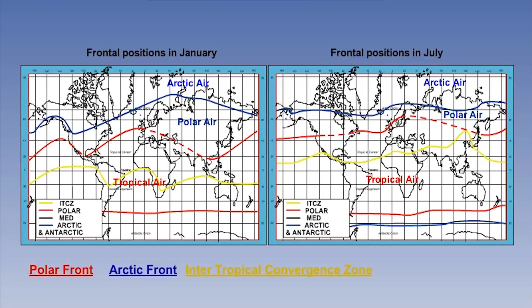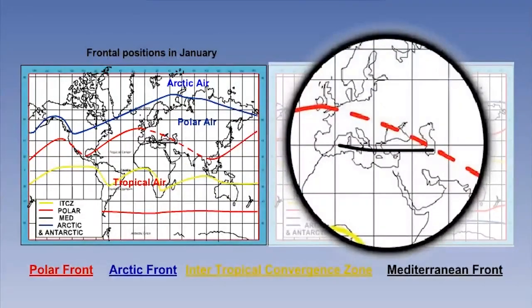In addition to the three main fronts, in the northern hemisphere winter, a boundary can also be identified lying over the Mediterranean Sea, approximately east to west. This is called the Mediterranean front.